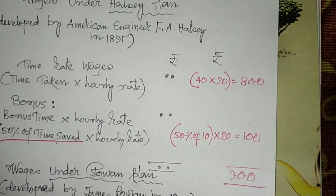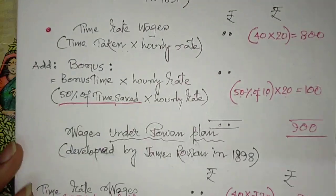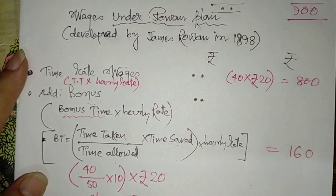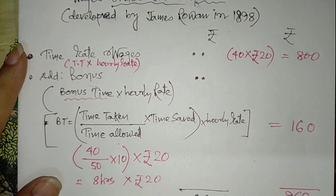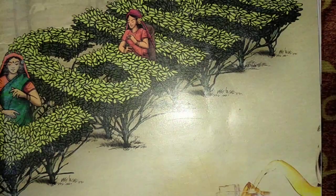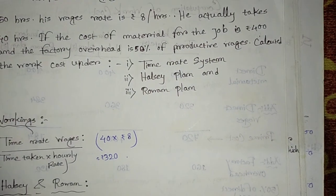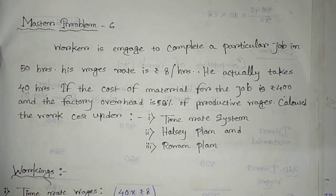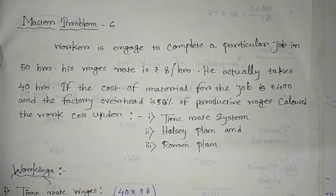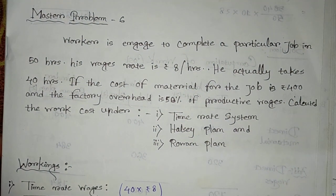Now we are introducing a problem on the Halsey and Rowan plans — Master Problem 6.